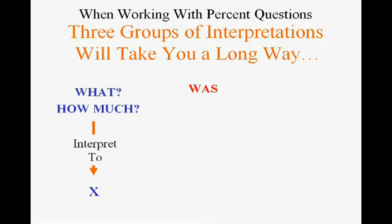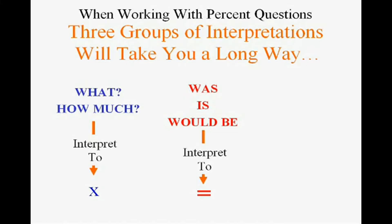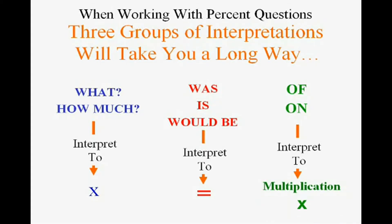Any verb or action word like 'was,' 'is,' or 'would be' is going to interpret to your old buddy the equal sign — he's the only thing that actually states an 'is.' That's two out of the three. And finally, you already know this: the word 'of' or 'on' is always replaced in math with multiplication.